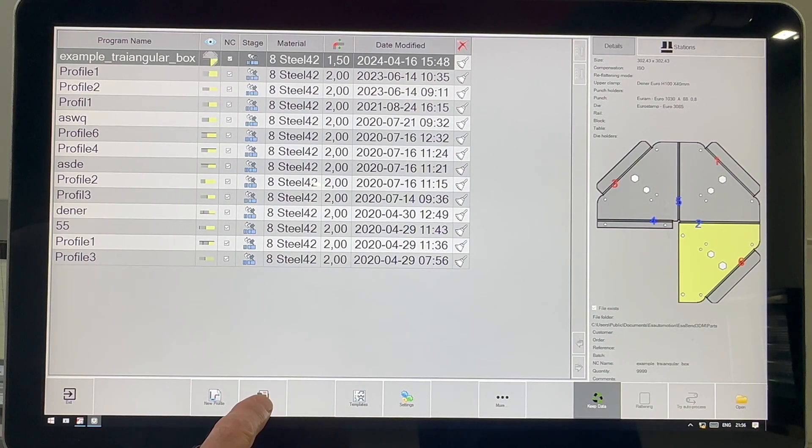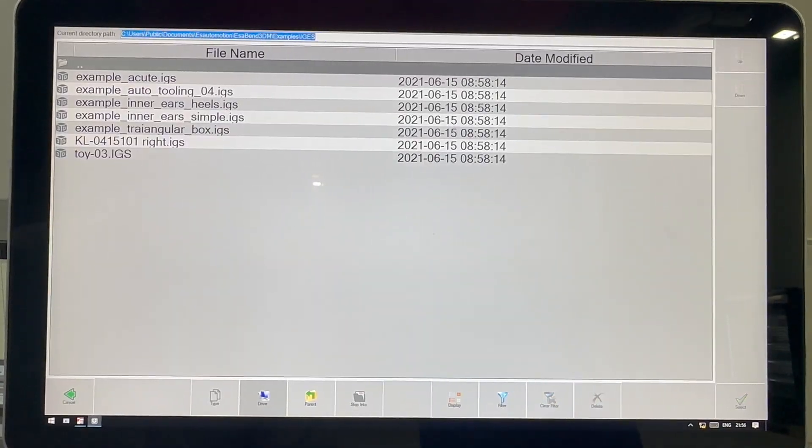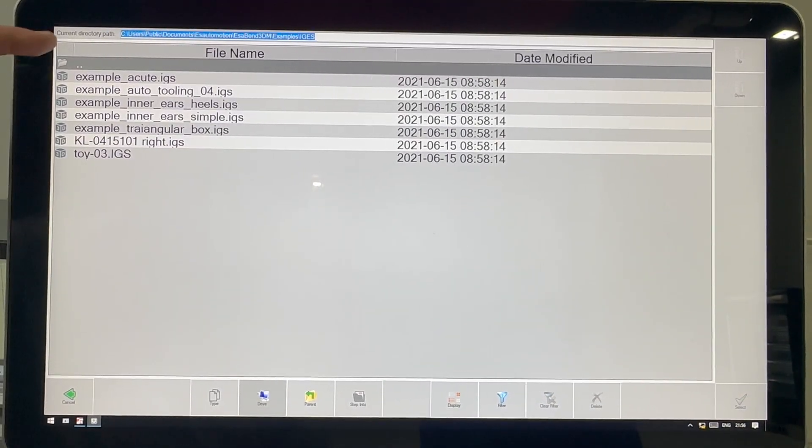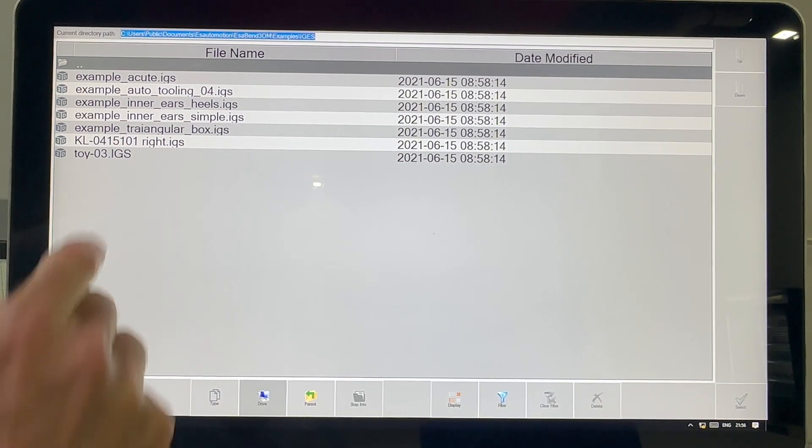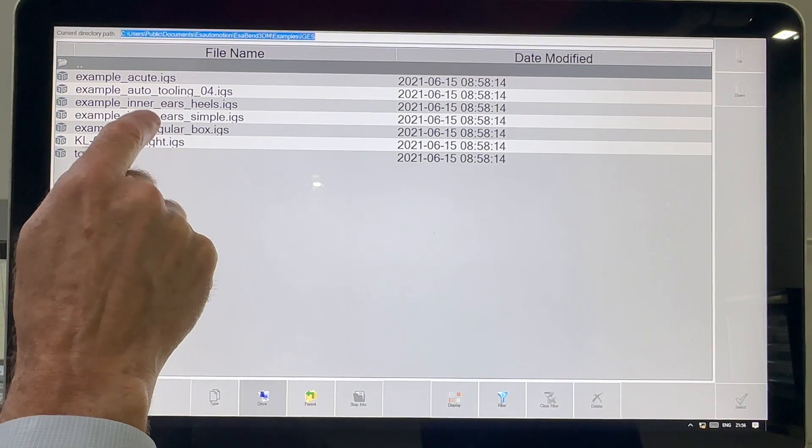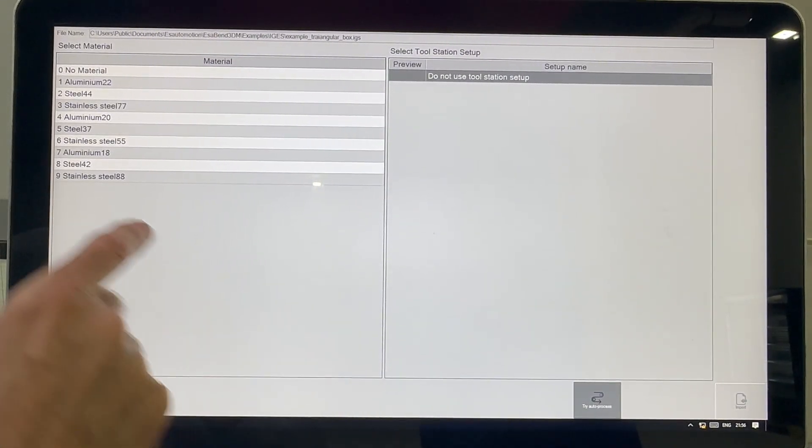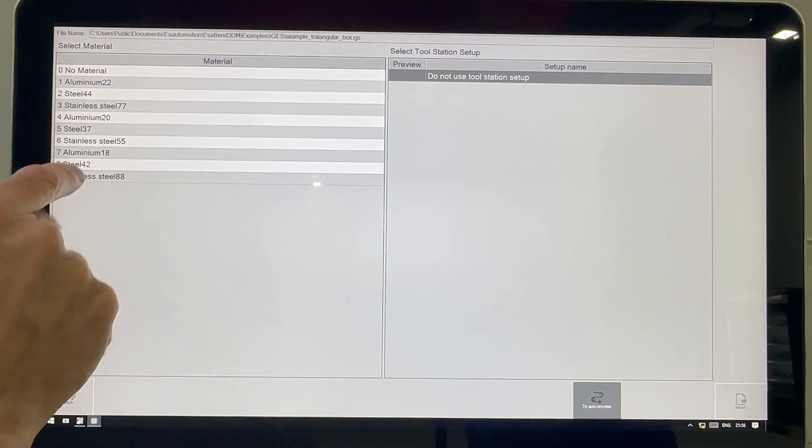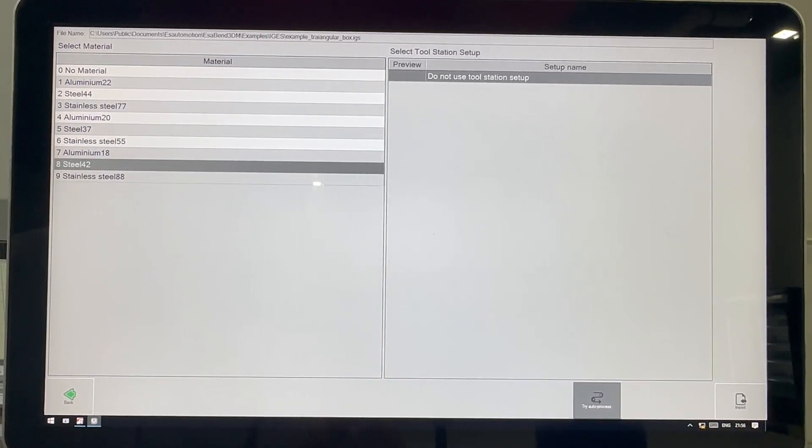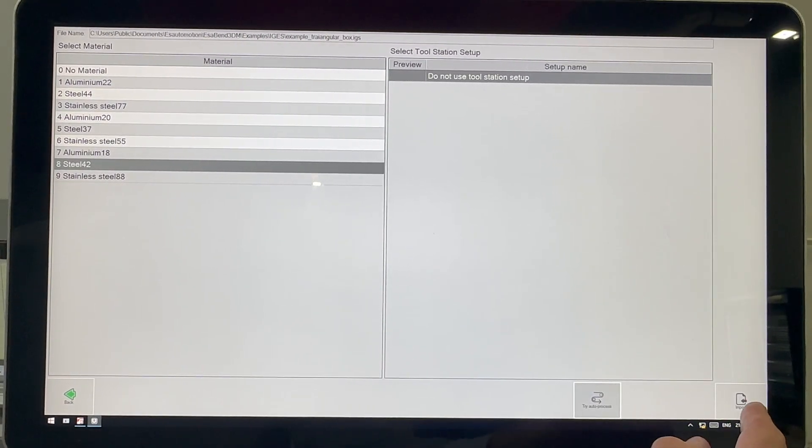Here, for example, is a folder of IGES files. On this machine, I have another folder of STEP files. It's a Windows application, so you can have many folders of parts. Let's pick on this little part here called triangular box. It's asking me what type of metal is this. Is it stainless steel? Is it aluminum? I'm going to say it's steel. Then I'm going to go import.